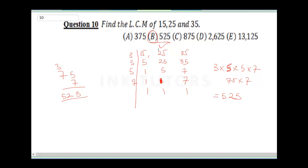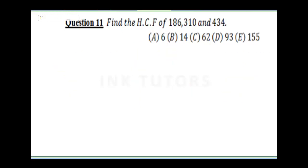The next question is question 11. It says find the HCF of 186, 310, and 434. You need to divide all these numbers individually, so 2 into 18 is going to be 9.